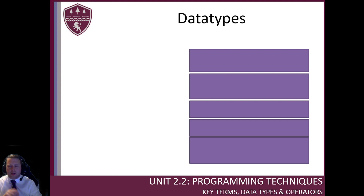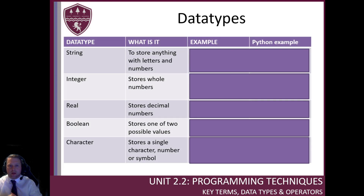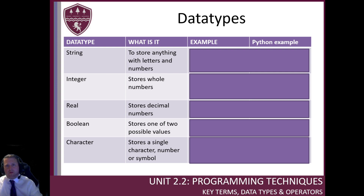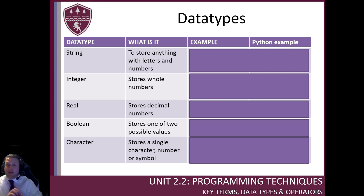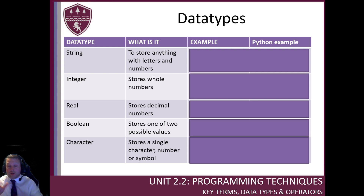Here are the data types to compare with what you came up with: strings, integers, reals, booleans, and characters. A string stores anything with a combination of letters and numbers. A phone number would be a string even though it has no letters — because it may have spaces, brackets, and almost certainly starts with a zero. If you stored it as a number the computer would strip that leading zero, thinking it makes no sense. Names, addresses, any combination of letters and numbers would be a string.